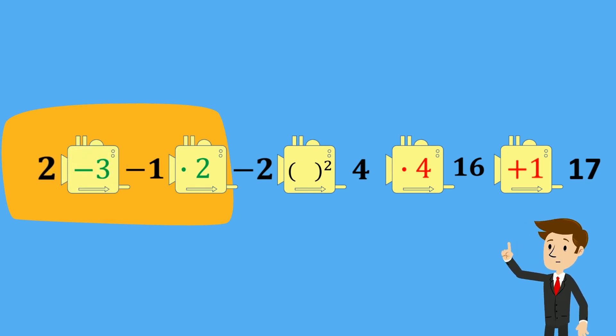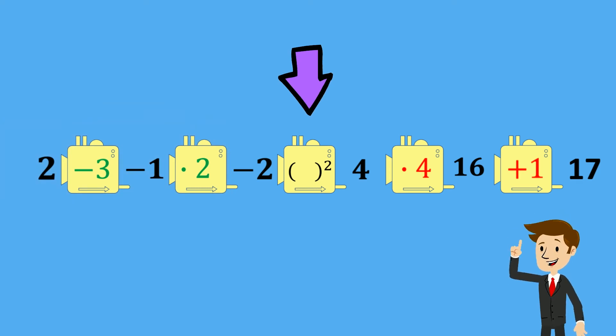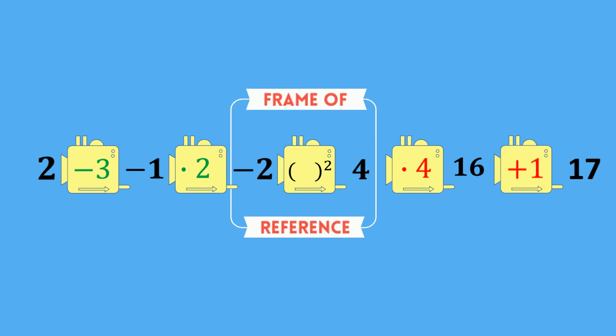So, the reason why it seems we are doing the inside transformations backwards is because we're reading them in relation to the parent function. In many ways, we're using the parent function as a frame of reference. Everything that happens after it works normal. But, we have to read operations in the opposite way when searching for the inputs that came before it.